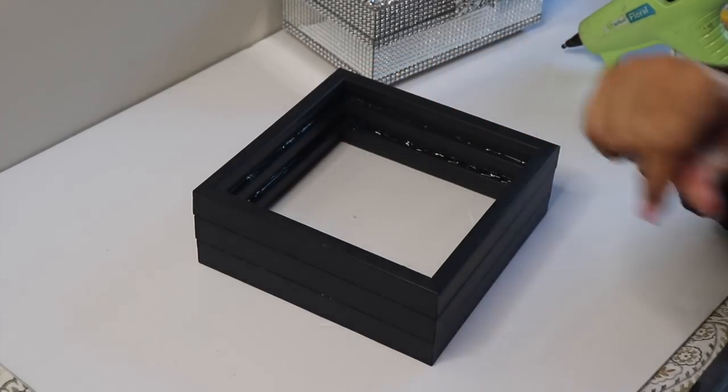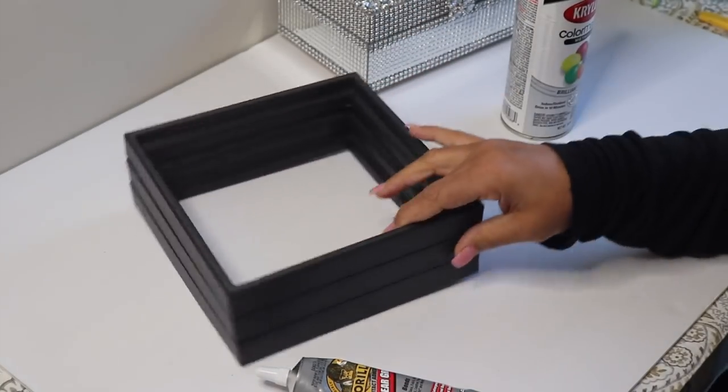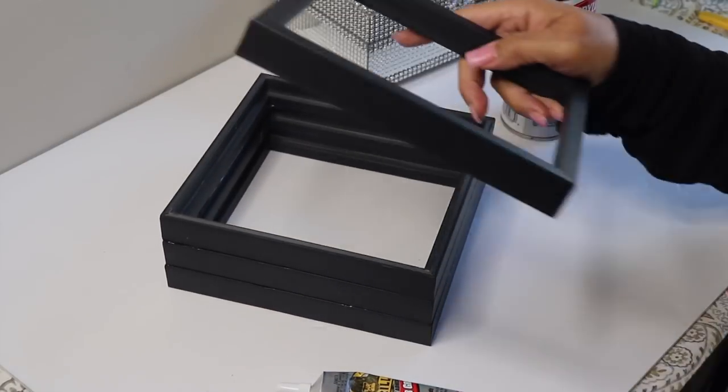Now I'll let the Gorilla Glue set up for a while. Now that the glue has set up, I'll paint the entire box and a single frame with silver spray paint.